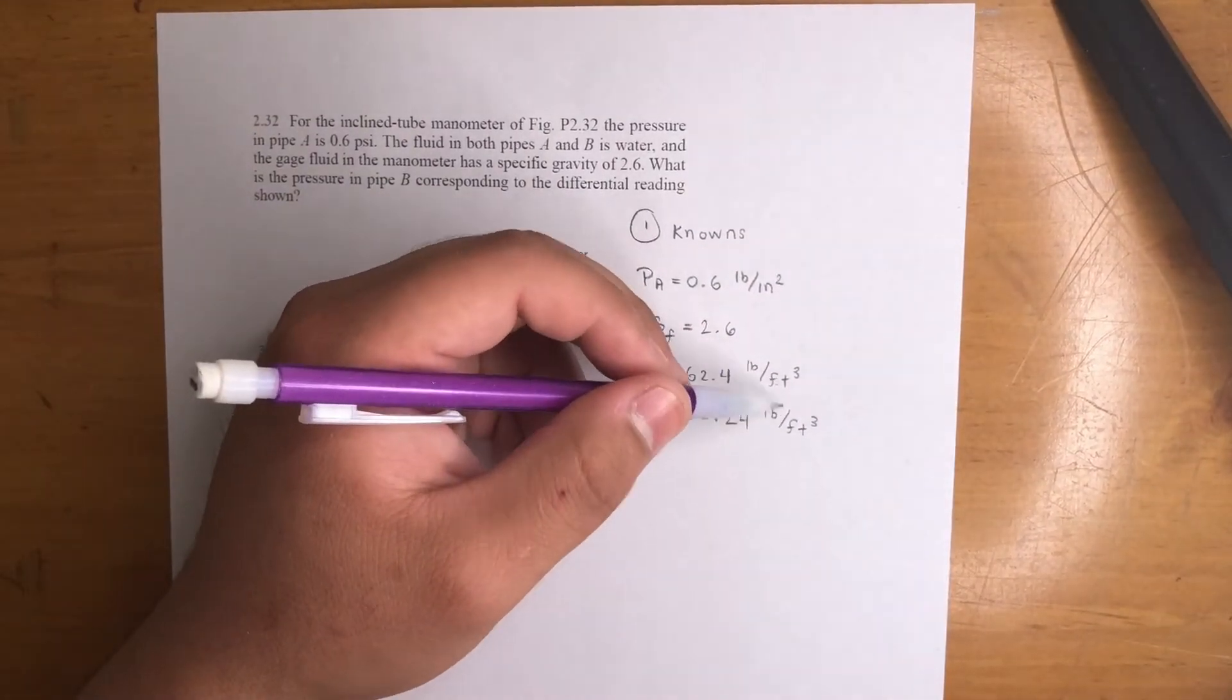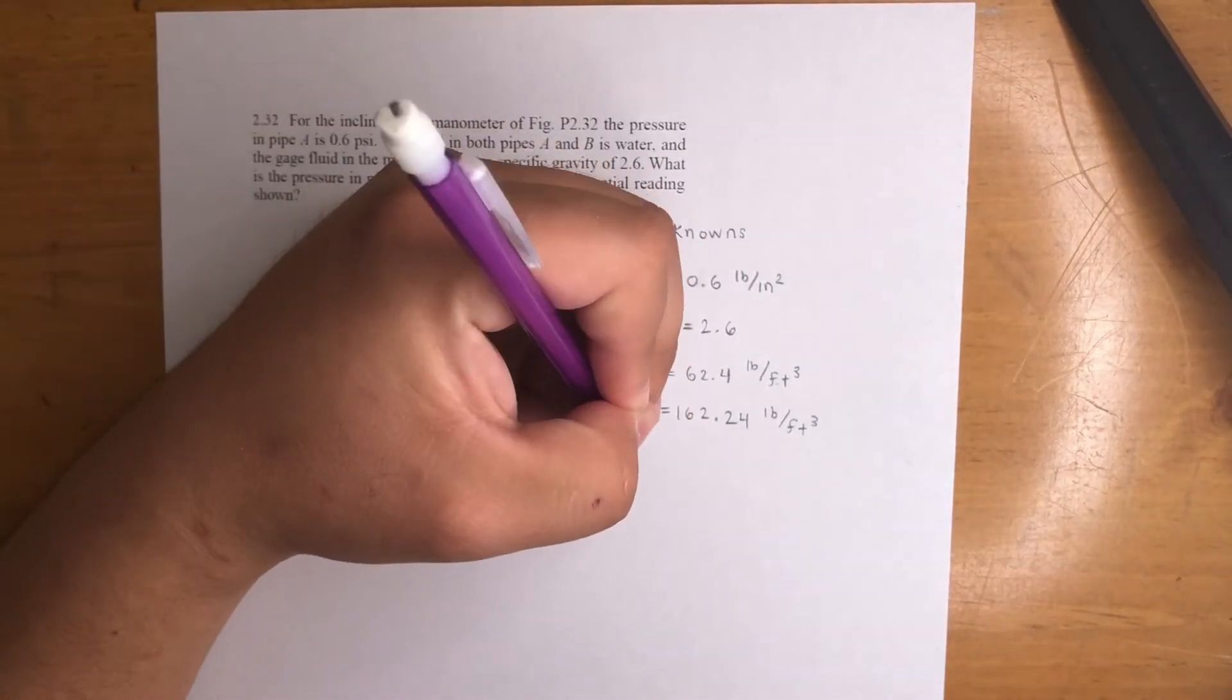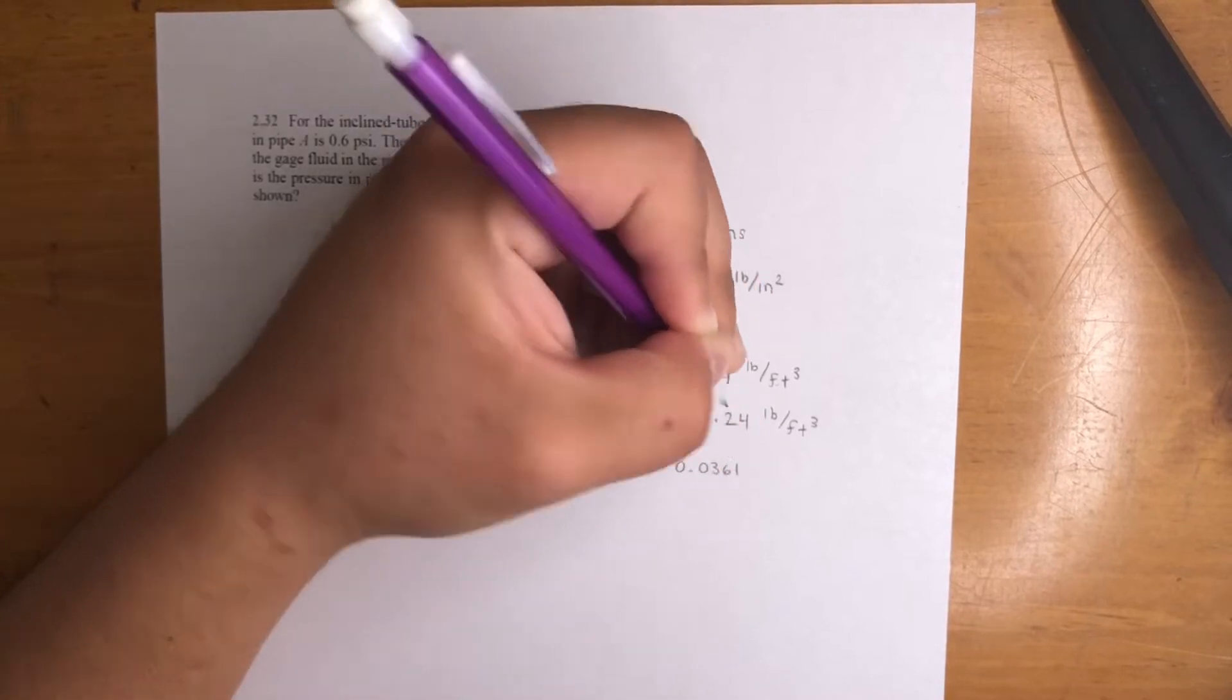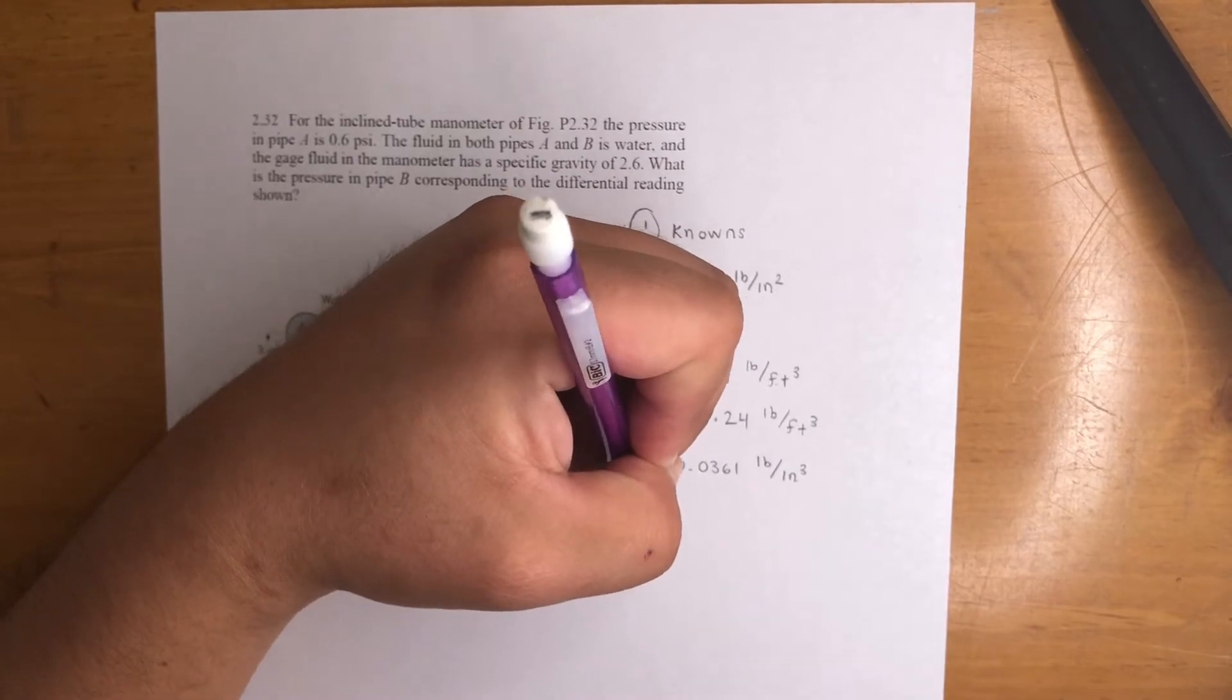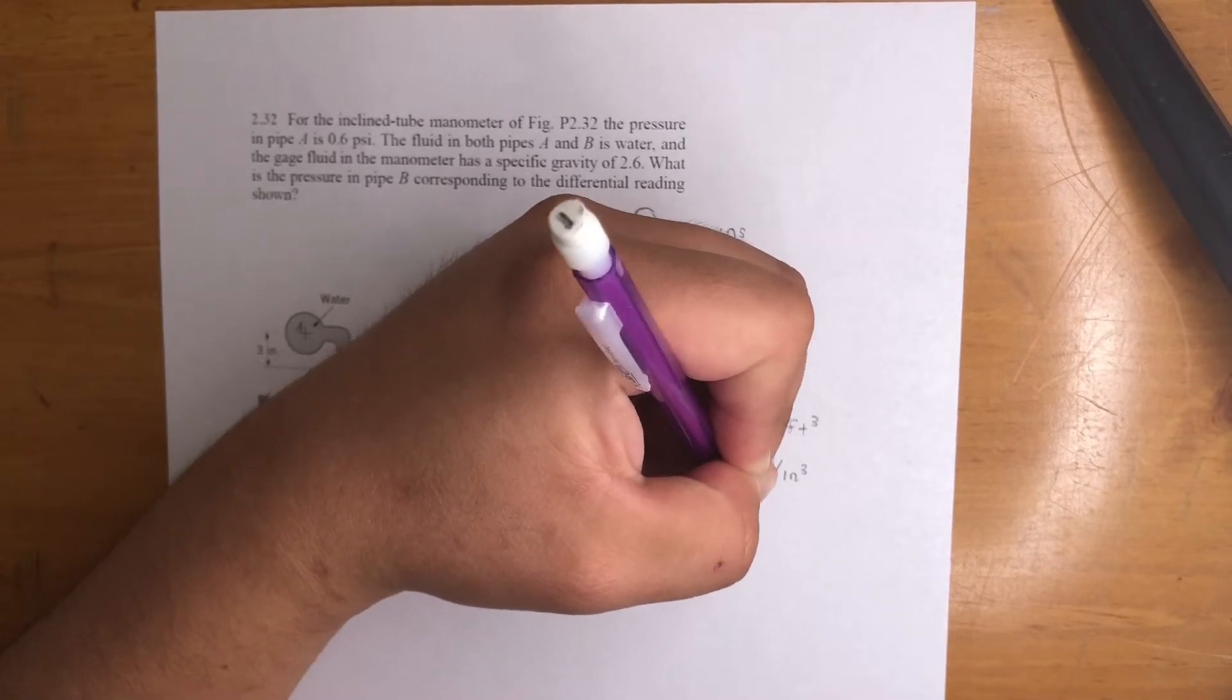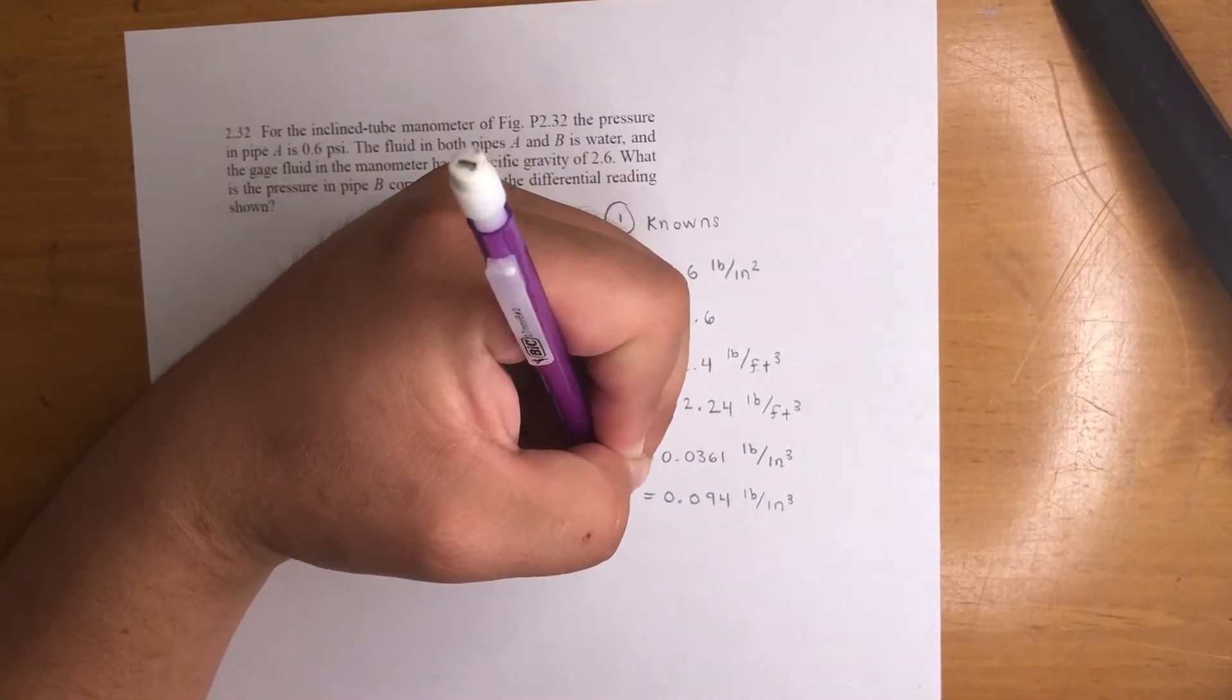But these are in feet. We got to convert these over to inches. So if you do that, all you got to do is divide by 12 three times. If you've seen the other videos, you should know what I'm talking about. So gamma of water will be 0.0361 pound per inch cubed, and the gamma of the fluid will be 0.094 pound per inch cubed. Cool, so these are the two we want because we're dealing with inches all around.